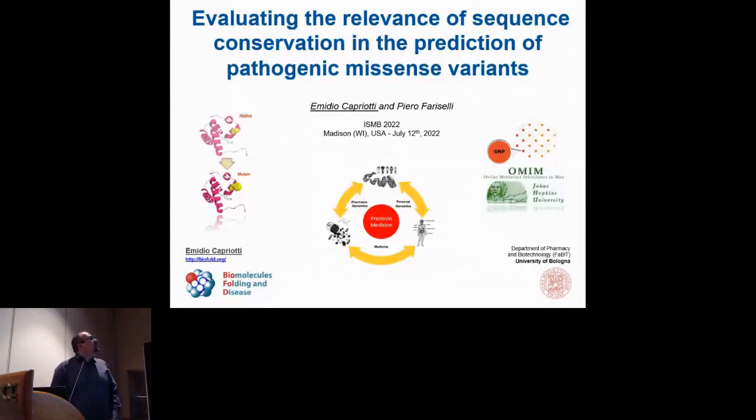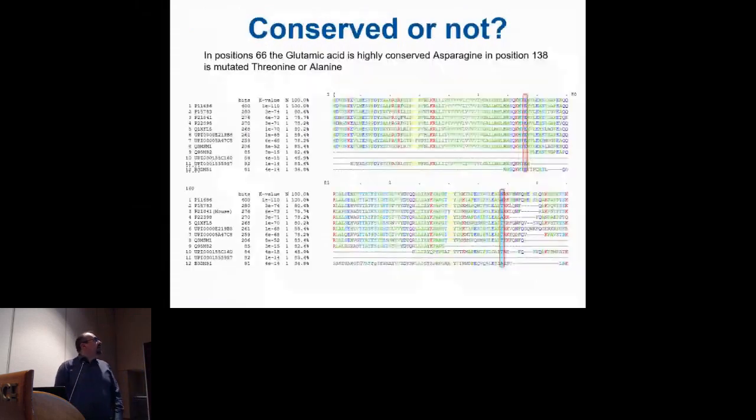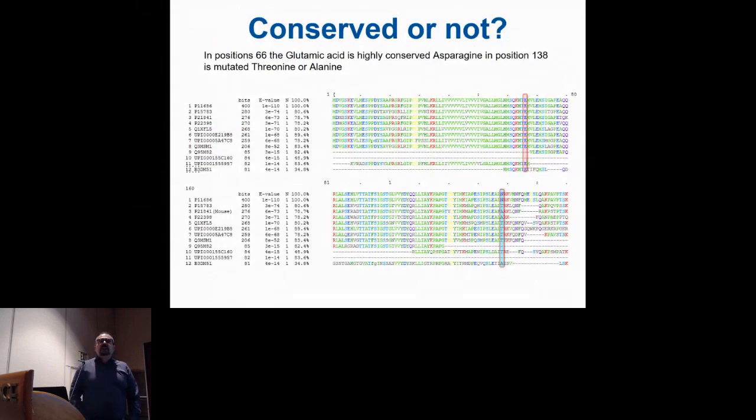What I'm going to present today is a very basic exercise to understand the role of information coming from evolution in the prediction of missense variants. This is mainly an exercise to understand what this kind of feature can help us with very basic methods. As we may all know, conservation is one of the main features driving this kind of prediction.